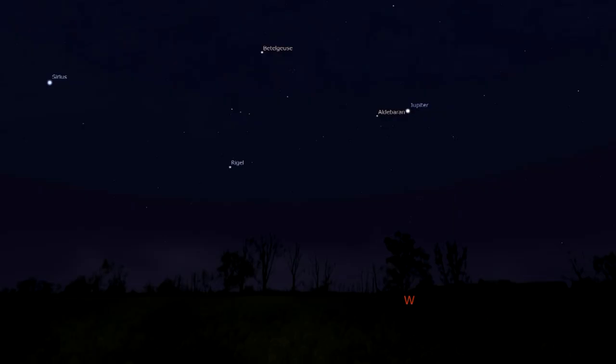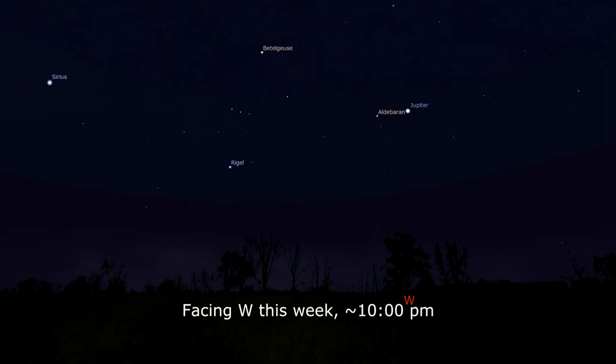Jupiter increases the speed of its prograde motion, passing above two 6th magnitude stars this week. The moon grazes past the first magnitude Spica on the morning of the 2nd, then visits the still rising Saturn on the 3rd, and achieves last quarter phase on the 4th.